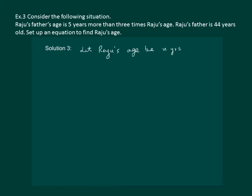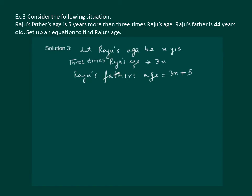3 times Raju's age means 3X. And Raju's father's age is 5 years more than 3 times Raju's age, means Raju's father's age is equal to 3X plus 5. But further in the question it is also given that Raju's father's age is 44 years. So that means 3X plus 5 is equal to 44.